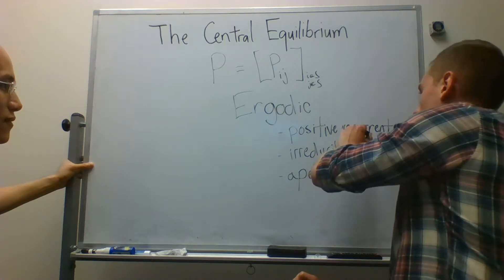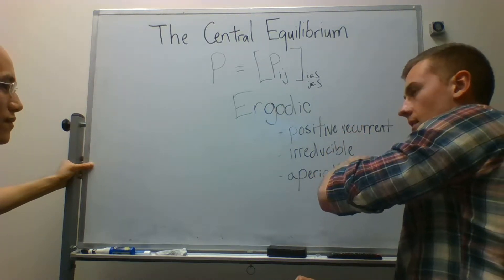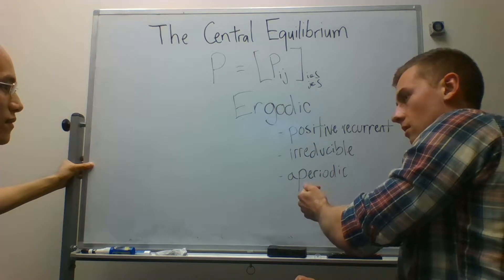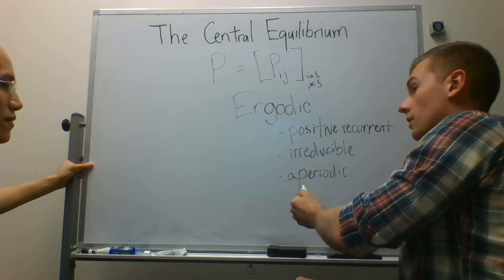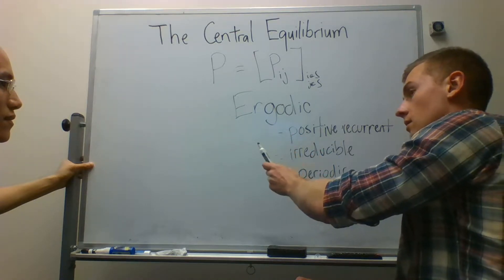Positive recurrence. The idea of positive recurrence is that a Markov chain has a positive probability of returning to a state once it leaves it.